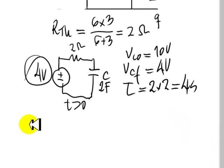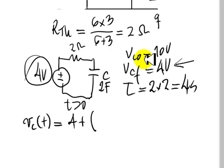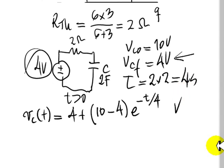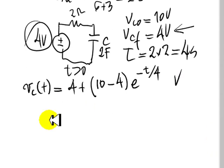Which means that the voltage in the capacitor, as a function of time, for t greater than zero, has the final value of 4 and has then an exponential riding on top of that, that begins at 10 volts and ends at 4 and has a time constant of 4 seconds. This is the voltage in the capacitor as a function of time for t greater than zero.